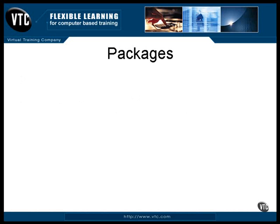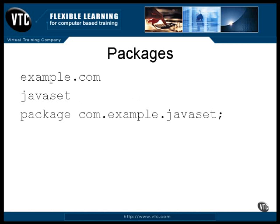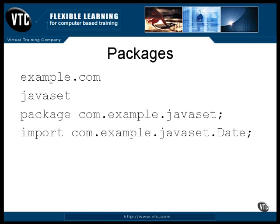You can come up with a unique package name by using your domain name in reverse. For example, say you have the domain name example.com — you could use it as is, or you could come up with a name for your package like javaset. Then the package name declaration for your classes would look like this. If you had a class named Date, it could be addressed from other classes with an import statement like this. If you look in the classes that are part of the standard distribution of Java, you'll see that some start with the name com.